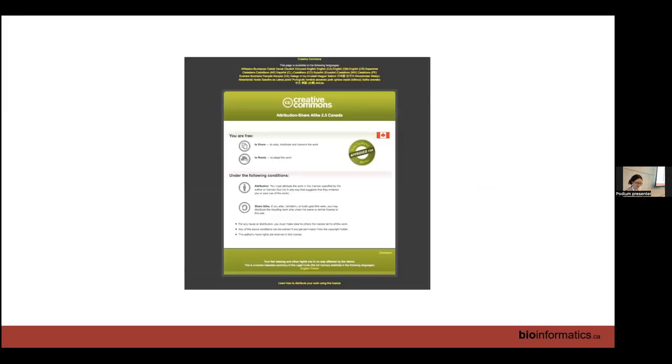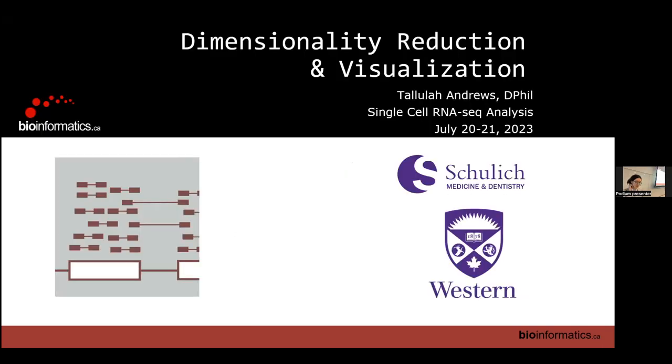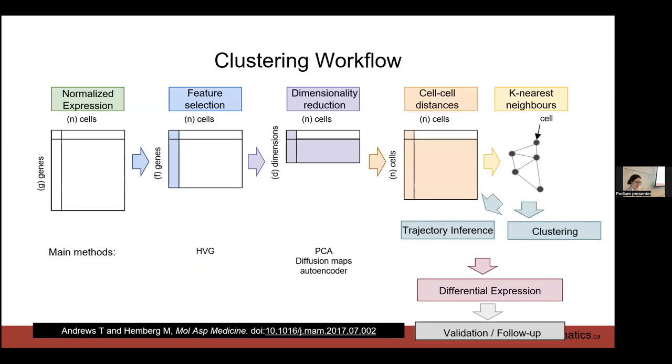Alright, so we're going to continue on with dimensionality reduction and visualization of single-cell RNA-seq datasets. Yesterday we covered the first step of our workflow, how to do QC and normalize our expression, the boring technical aspects. Today we're going to do all the fun stuff, the biologically relevant analysis and getting to our biological interpretation.